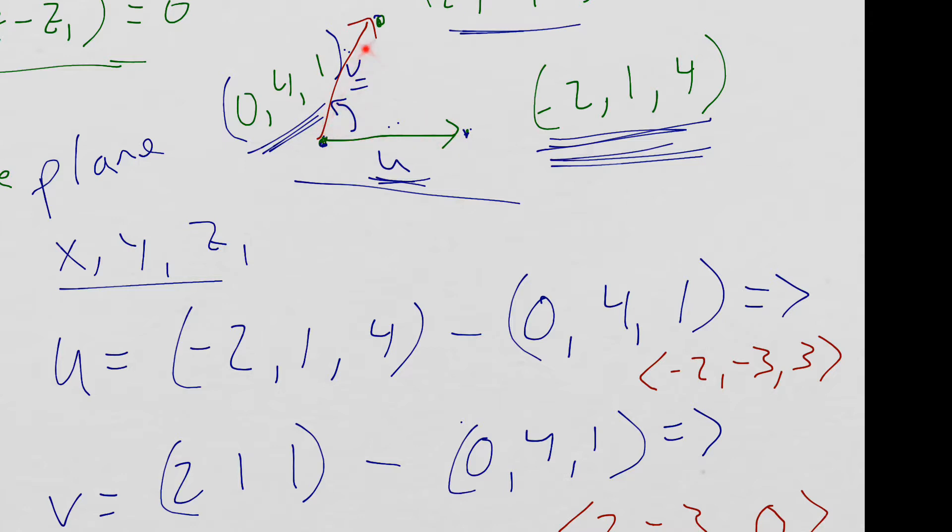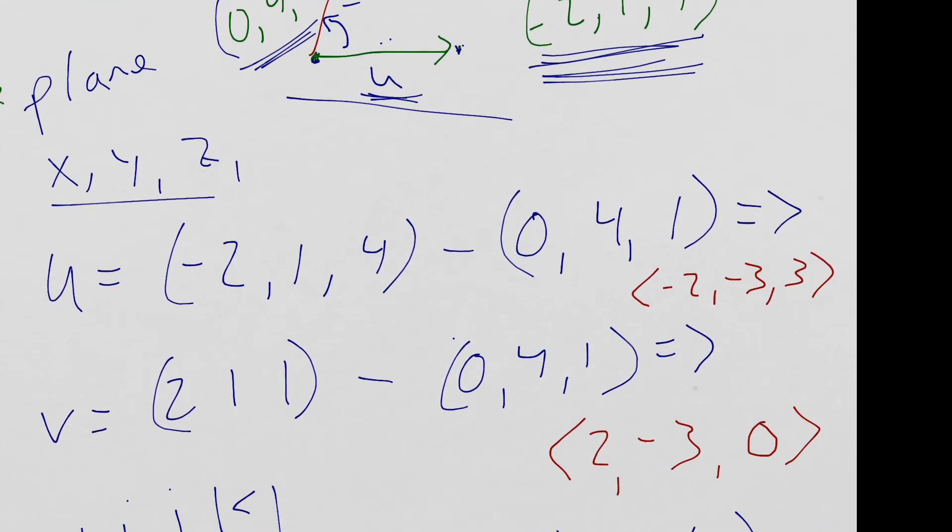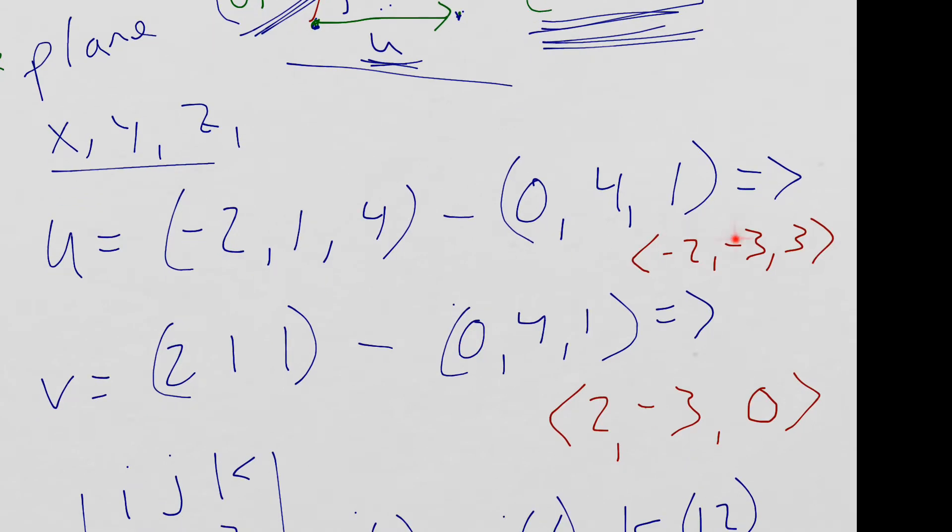Vector V going from this point to this point. Okay? It's 2, 1, 1 minus 0, 4, 1. So 2 minus 0. 1 minus 4 is negative 3. 1 minus 1 is 0. So these are the two vectors you get. Okay? U and V.